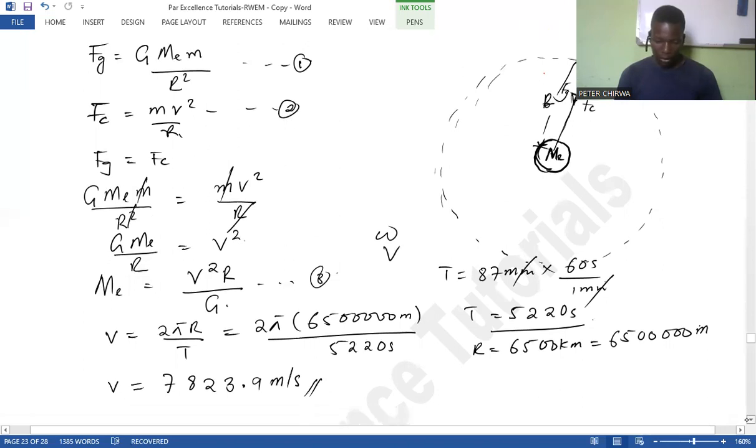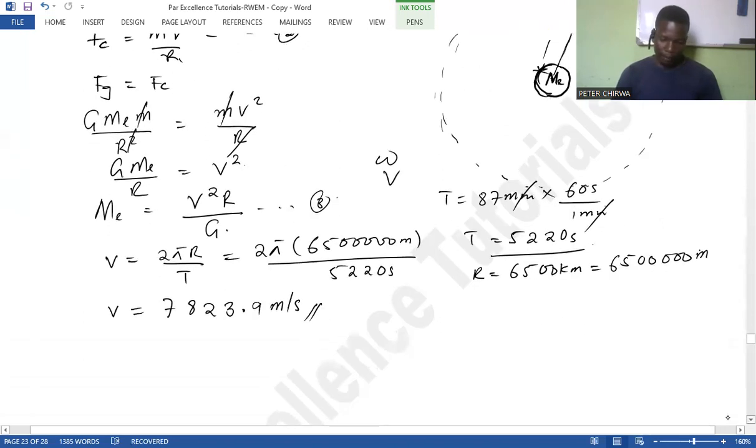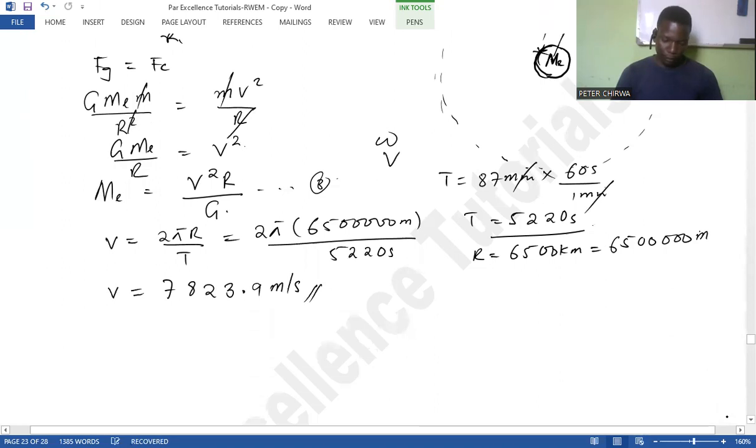Okay. So now, in the formula we have velocity squared, so I can square it right here. And what I'm going to get is 61,213,250.83 squared.